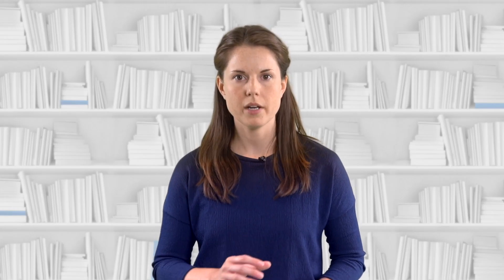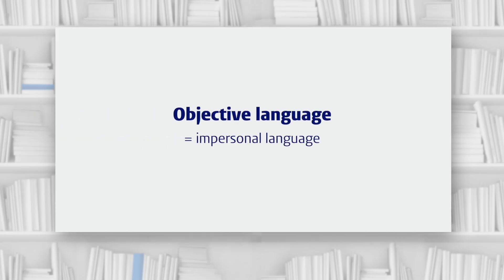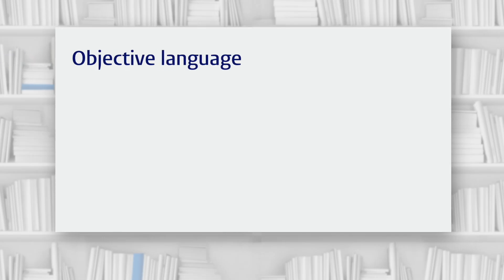Objective writing is impersonal writing, so when we write objectively we keep our distance from what we're writing about. Let's look at the key ways that you can make your writing more objective. Firstly, objective writing is based on facts and logic, not personal opinion.